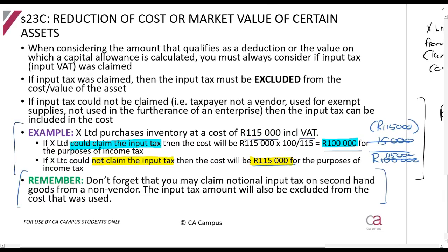Remember: if any VAT was claimed, it must be reduced from the cost — this is very important. This is also why in questions you will often see the instruction 'all amounts exclude VAT in this question.' That means the examiner has already done the work for you, since most entities are VAT vendors. However, please do be on the lookout for situations where this has not been done.